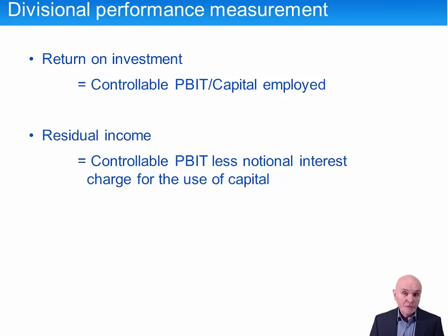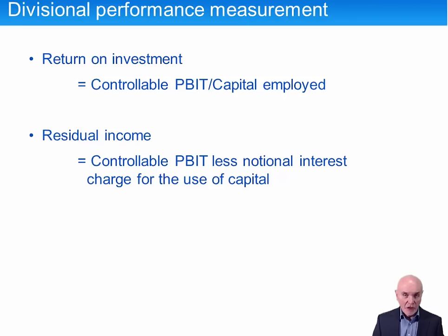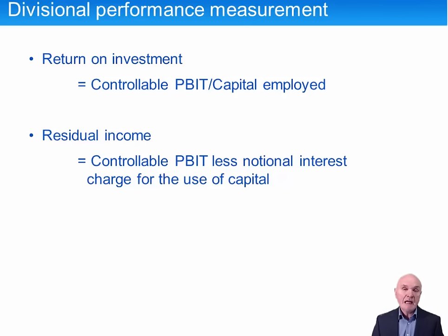There are two main approaches to divisional performance measurement. The first is return on investment, which is very like return on capital employed. Head office is investing money into those divisions, and we're looking at the earnings which the divisions make, expressing that as a percentage of the capital employed. So it is the controllable profit before interest and tax, divided by the capital employed — really just like doing return on capital employed on an independent company.